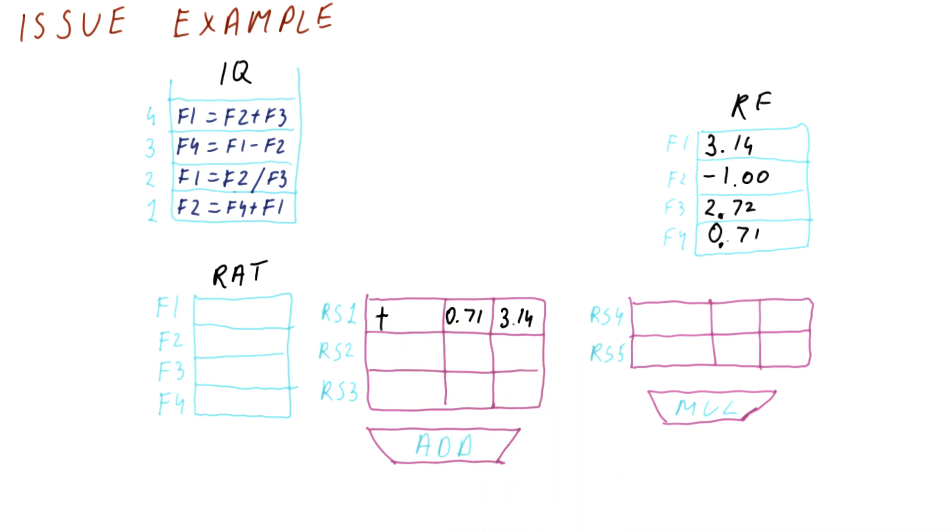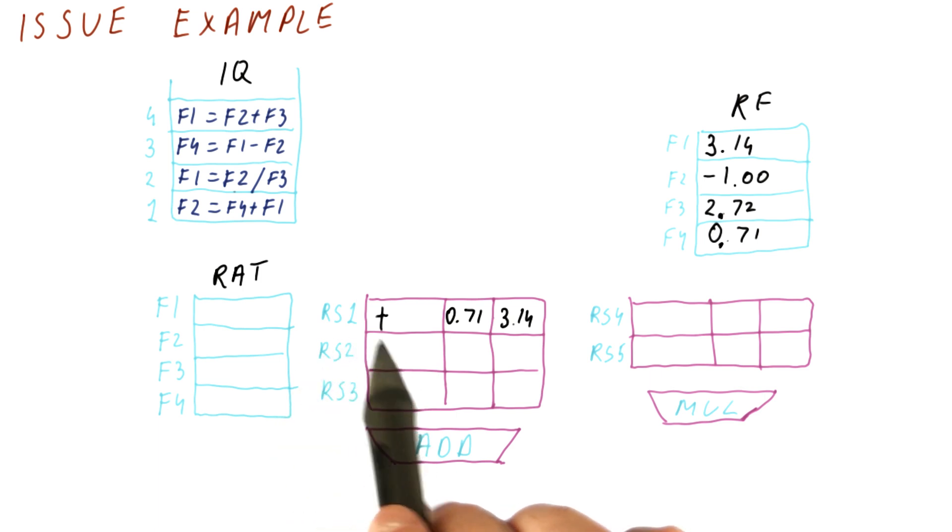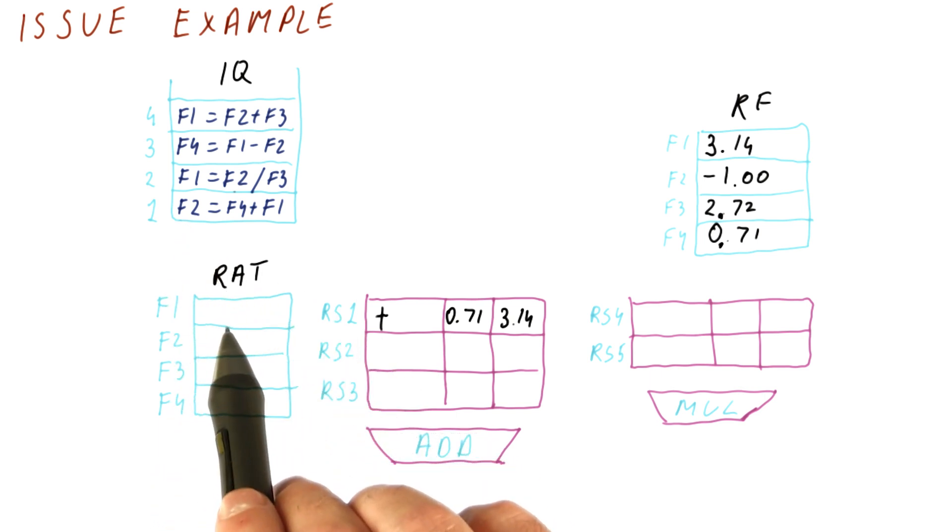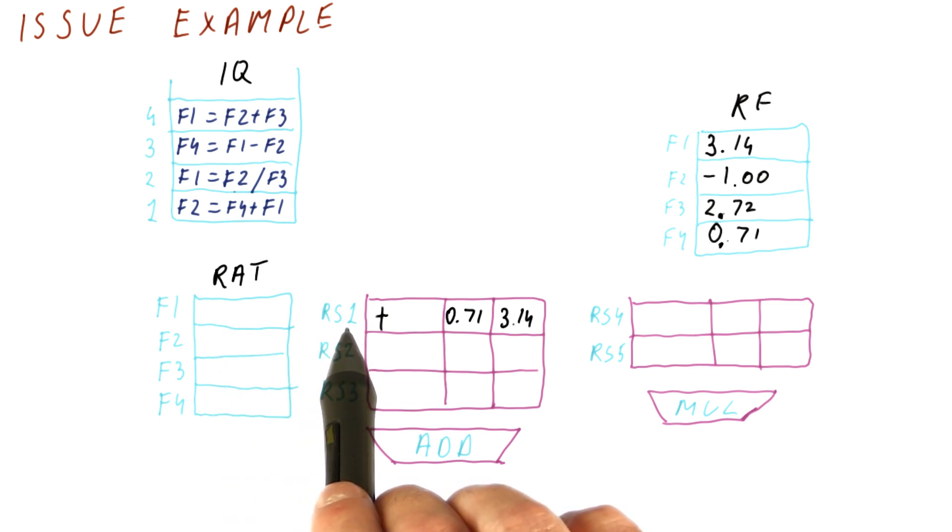Of course, that assumes that there is a reservation station available. We will see eventually what happens when there isn't any. And the final step for register renaming is to say that the result of the instruction, F2, is going to come from now on from reservation station 1.